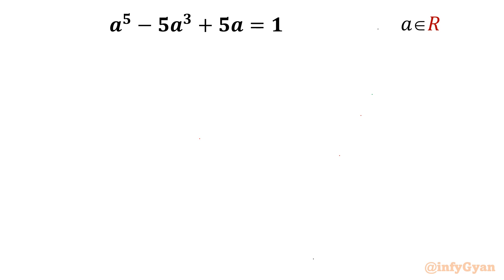Welcome back to Infigyan, my dear friends. In this very exciting and powerful video on algebraic challenging equations, we are going to take up one very interesting quintic equation today. The given equation is a⁵ - 5a³ + 5a = 1, where a belongs to the real numbers. If you want to attempt it on your own, you can pause this video and then cross-check your solutions. One solution is straight away visible to us; the remaining 4 is the main task to find out.